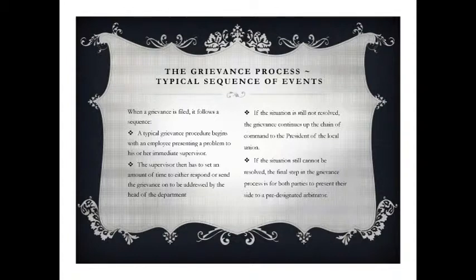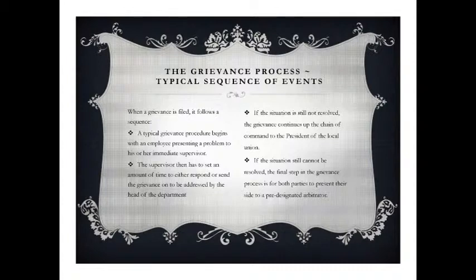A typical grievance procedure begins with an employee presenting a problem to their immediate supervisor within a certain time period after the offending event has occurred. The supervisor then has a set amount of time to either respond or send the grievance on to be addressed by the head of the department. At this point, union representatives enter the negotiations on behalf of the employee. If the situation is not resolved, the grievance continues up the chain of command to the president of the local union. If the labour union fails to follow the procedure at any point, the contract usually specifies that it must drop the grievance.